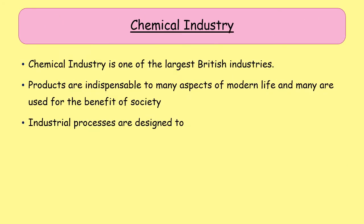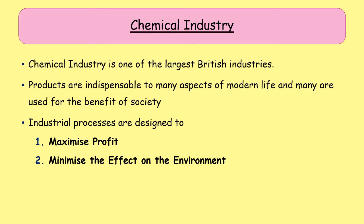The chemical industry is one of the largest industries in Britain and the world — it is a billion, approaching a trillion dollar industry. Chemical products are essential for every aspect of our lives and that's only going to continue; only the nature of the chemicals will change. Industrial processes are designed to maximize profit and minimize the effect on the environment. That first goal has been the main focus for many decades, and increasingly the new effort is to minimize environmental impact, which is where a lot of chemical advances are being made.